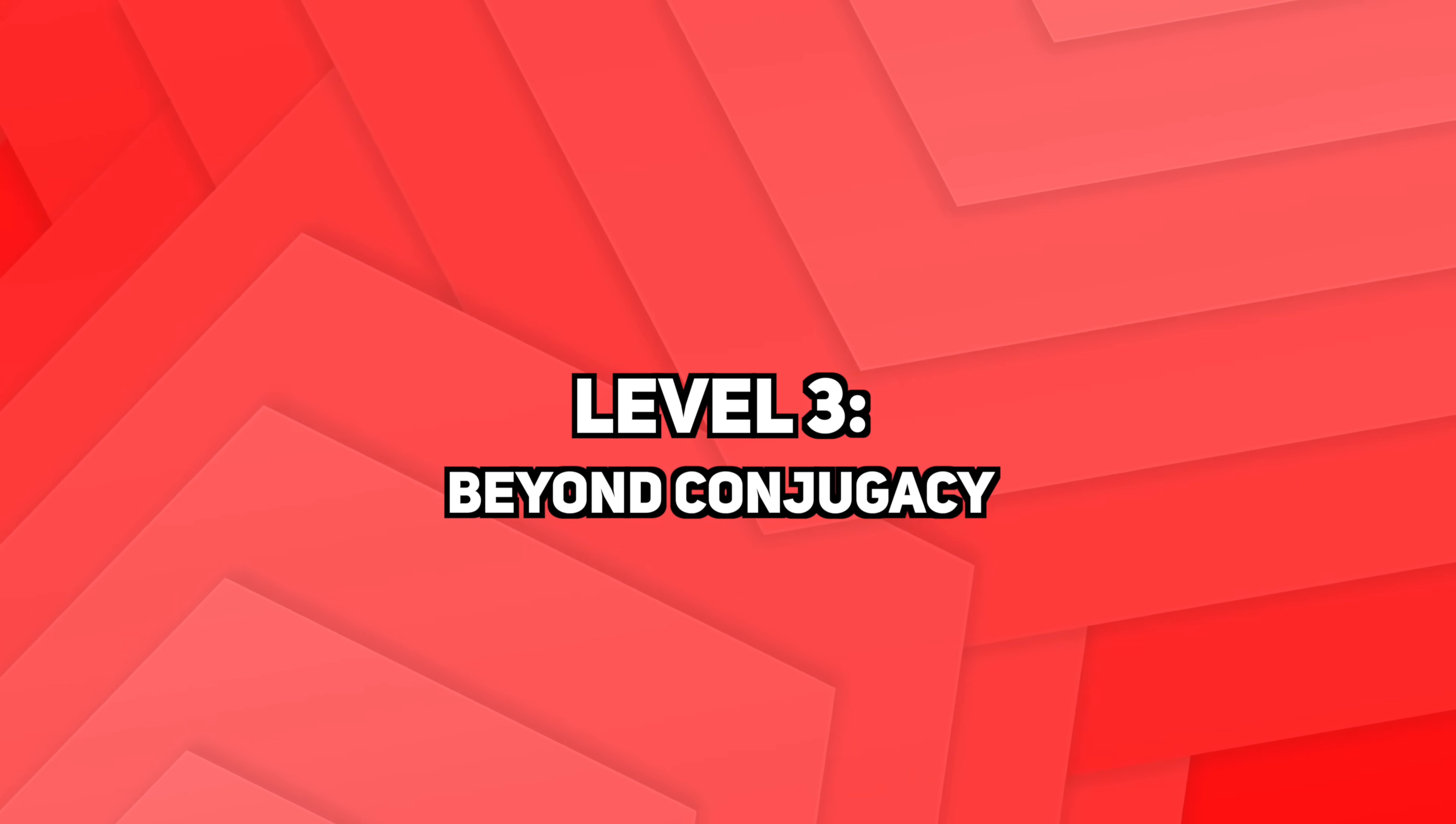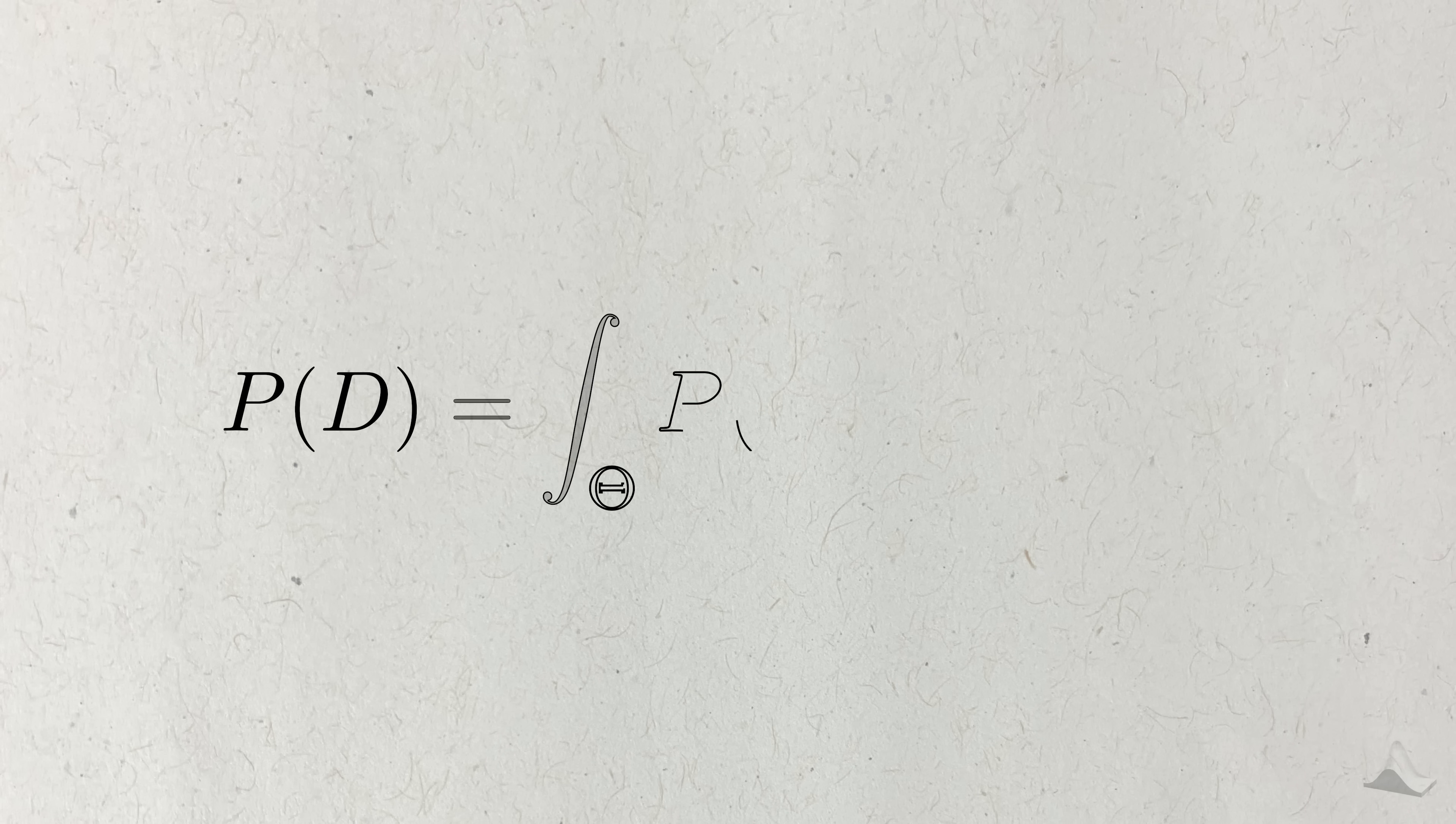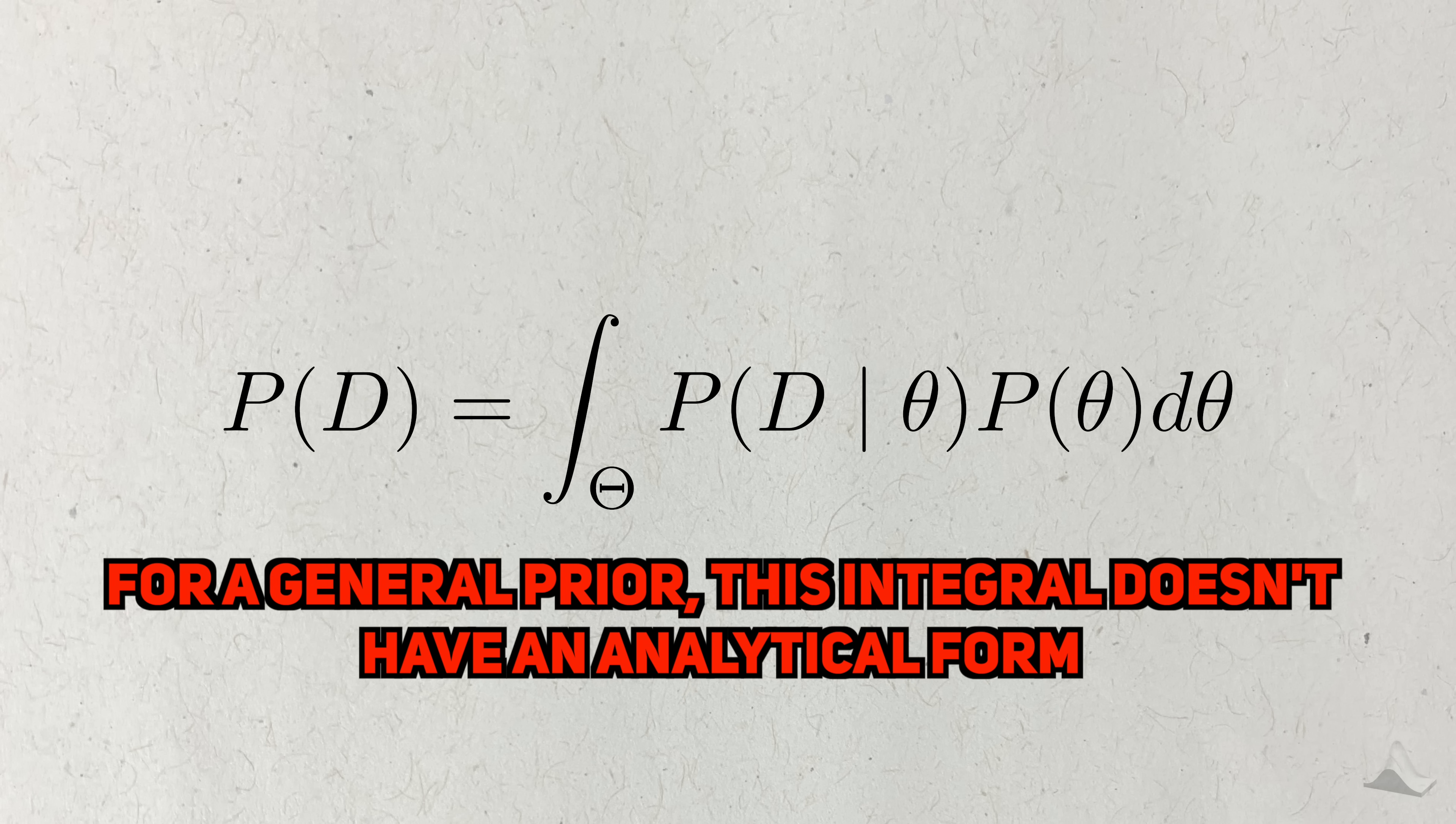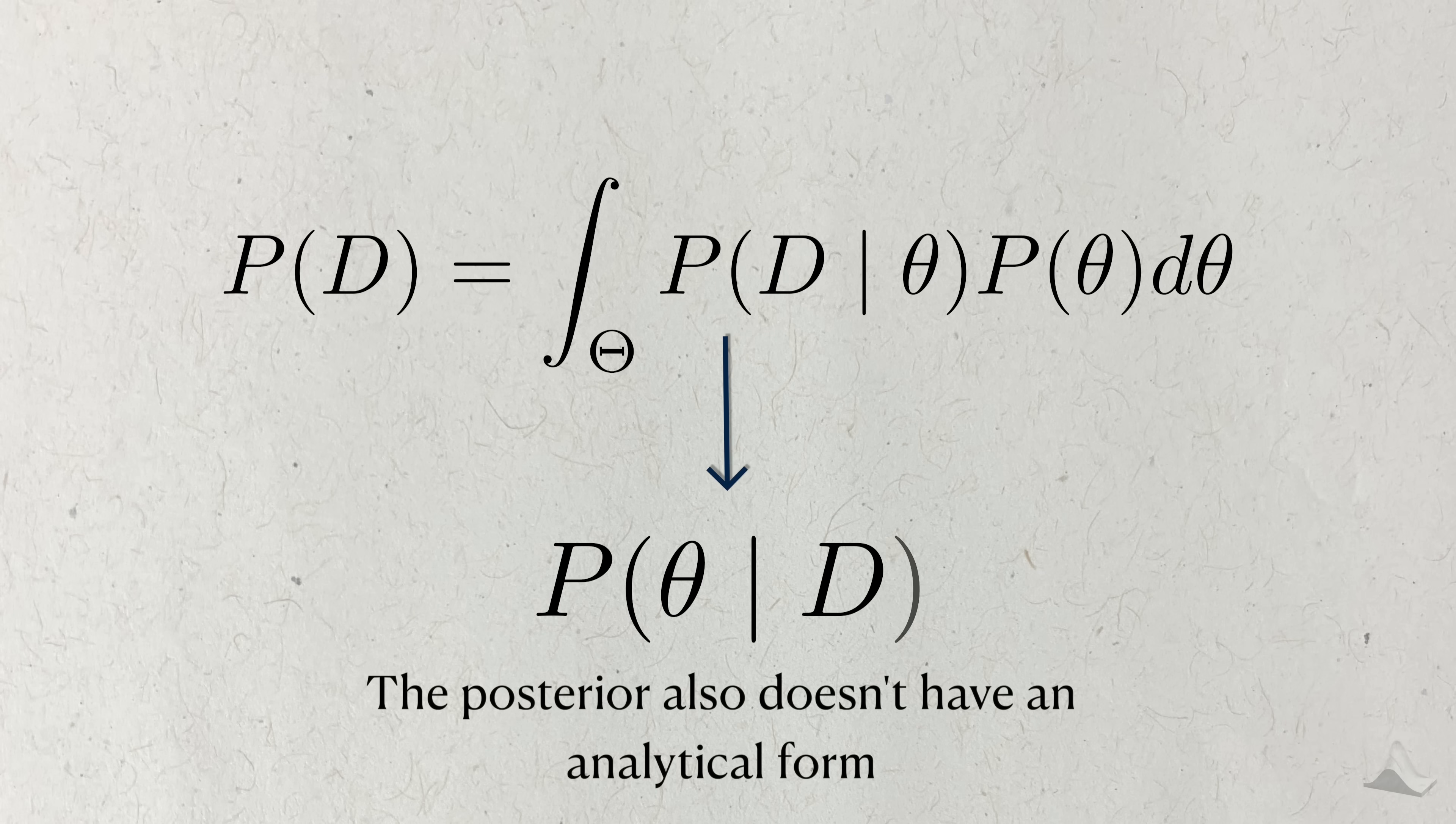Level 3. Beyond conjugacy. What happens if you try to use a non-conjugate prior? Well, the recurring villain in Bayesian statistics is this integral you need to calculate to get the posterior distribution. See that? That's the prior right there. For a general prior, it's not guaranteed that this integral can be written in what's called an analytical form, which is just a fancy way of saying we can't write an equation for it. If we don't know the form of this integral, then we also don't know about the form of this posterior.